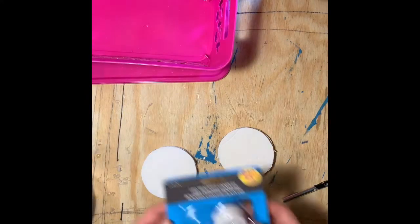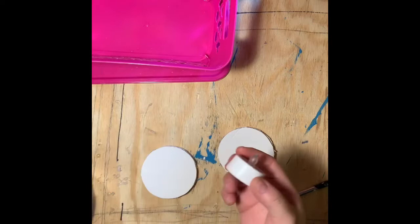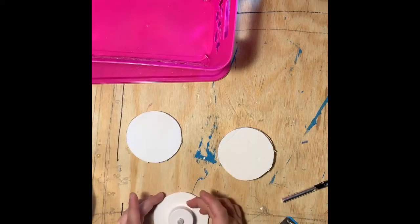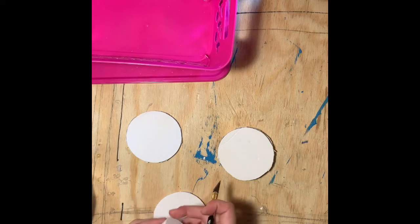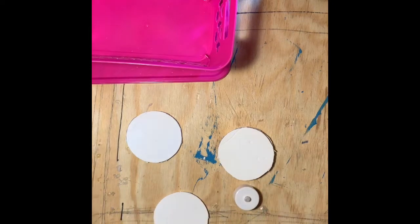With all four circles cut out, you're going to take your tea light, center it, and then draw on the circle. You're going to do that to all four circles, and then you're going to cut them all out.